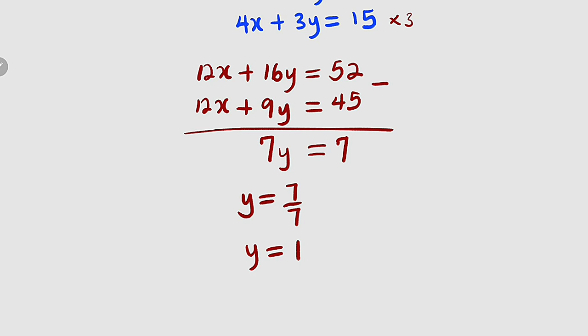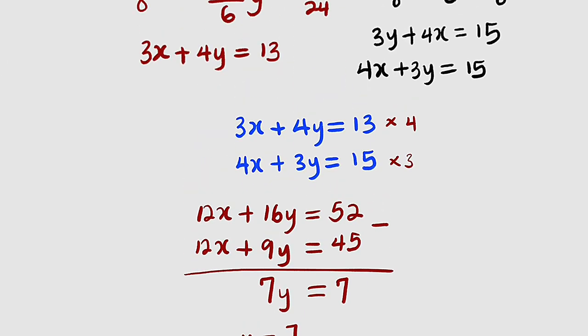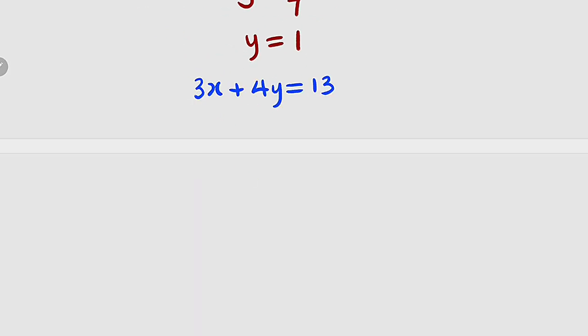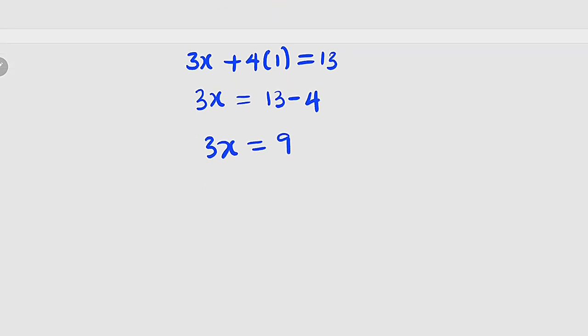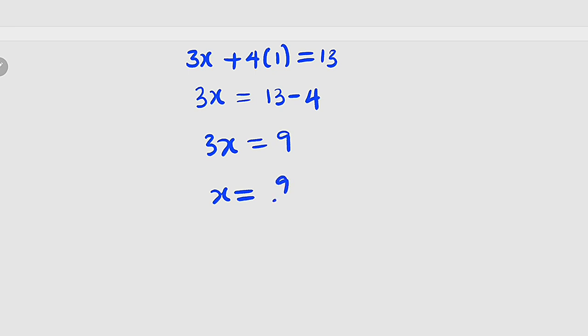So if y is equal to 1, what will be the value of x? We can use any of these equations. Let's use equation 1. We have 3x plus 4 multiplied by 1 equal to 13. 4 times 1 is 4, so we can take it to the right-hand side. We have 3x equal to 13 minus 4. And 13 minus 4 equals 9. So 3x equal to 9, divide both sides by 3, x equal to 9 by 3, and x equal to 3.